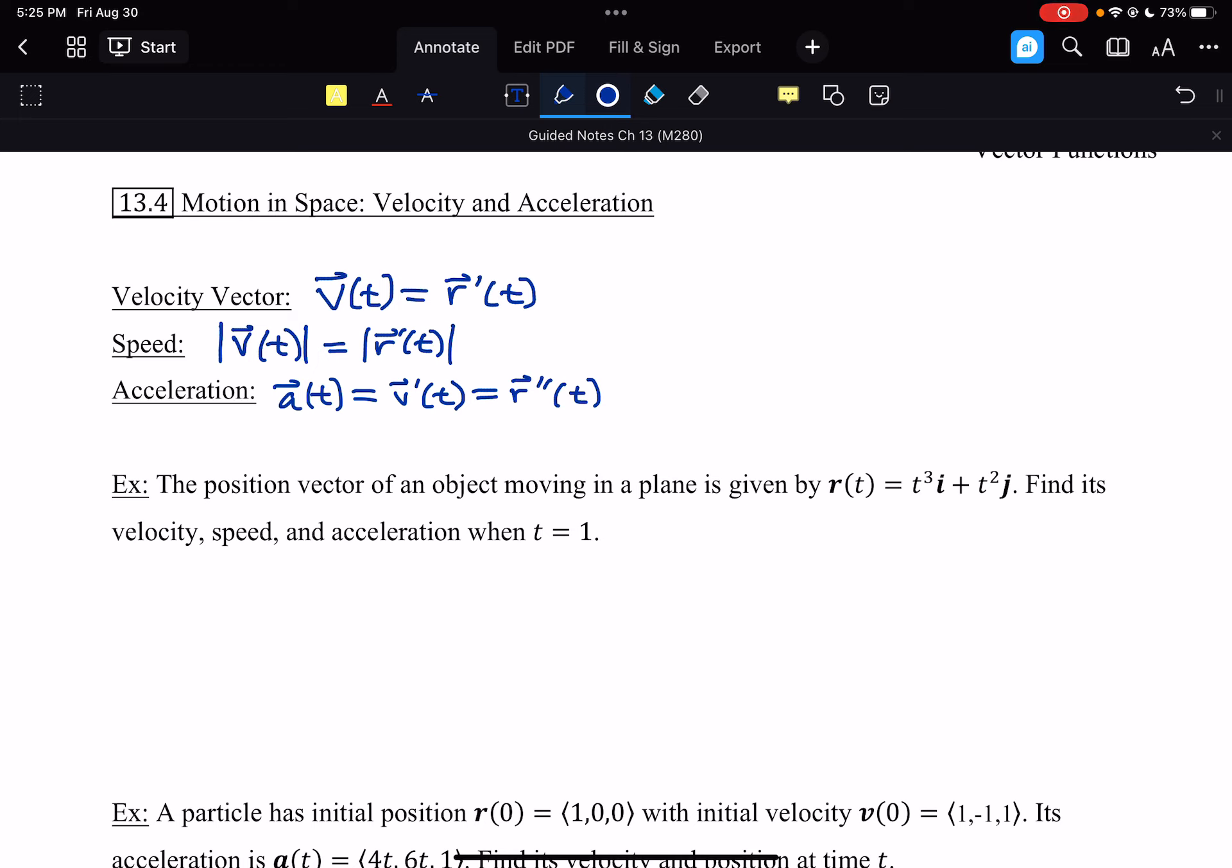If we look at this first example, the position vector of an object moving in a plane is given by r(t) = t³i + t²j. Find its velocity, speed, and acceleration when t = 1. We can get these formulas rather quickly. We get v(t) is the derivative of r, so we just differentiate each component. That's 3t²i + 2tj.